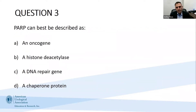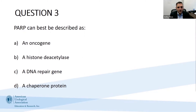Question three: PARP can best be described as: A, an oncogene; B, a histone deacetylase; C, a DNA repair gene; or D, a chaperone protein.